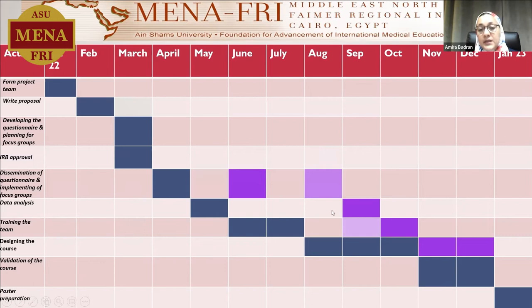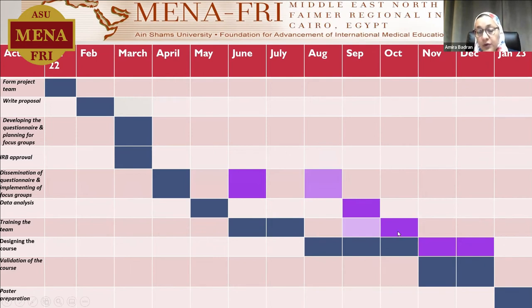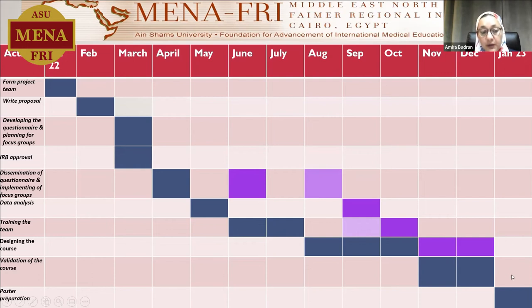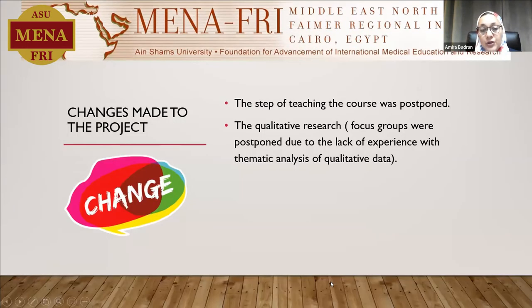Accordingly, data analysis was postponed to be done next month in September, along with training of the team. We will start designing the course in October and November, validation will be done by December, and hopefully by January the poster will be ready to be presented.